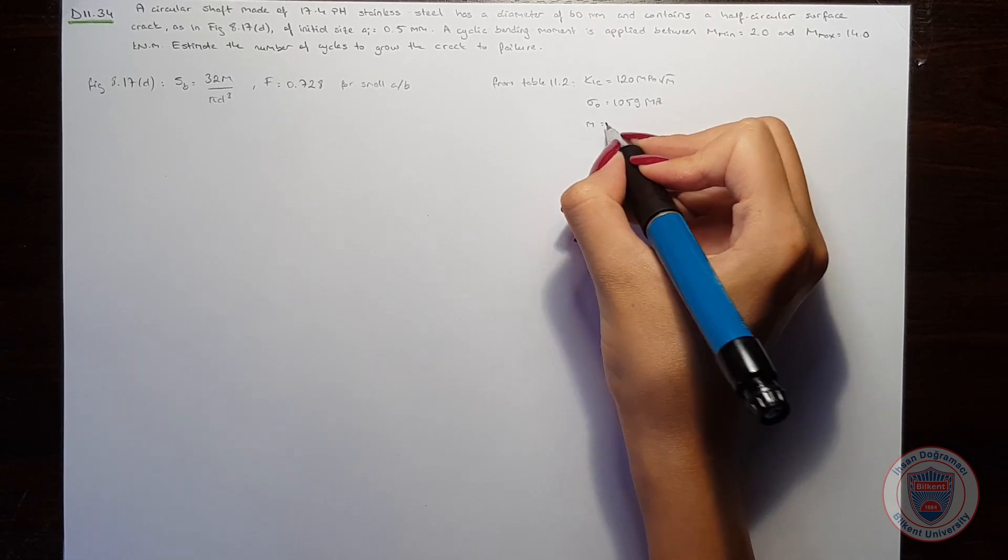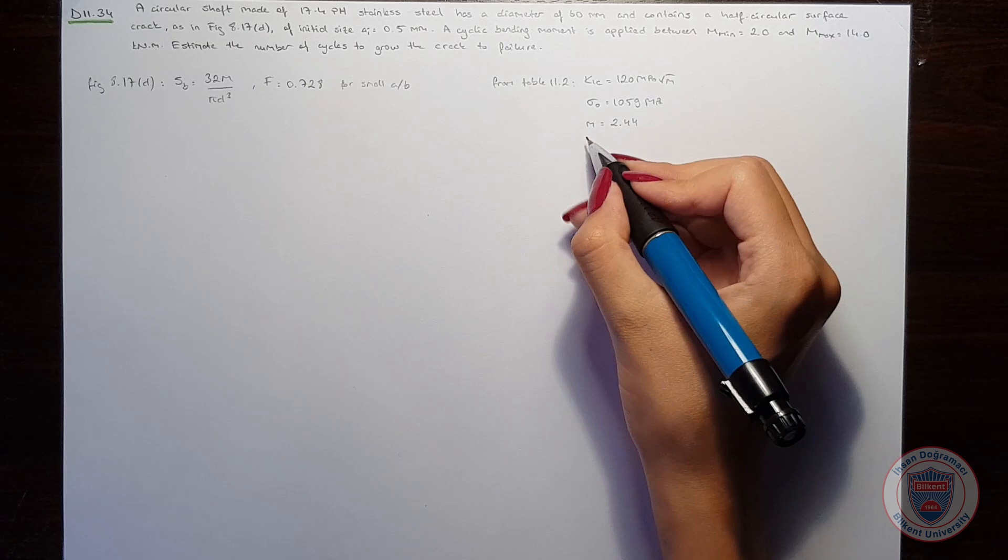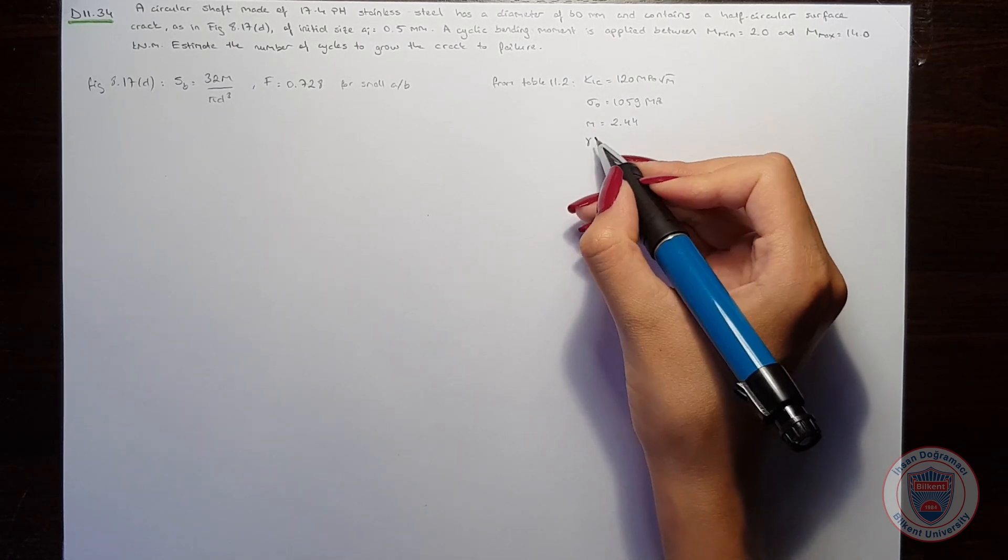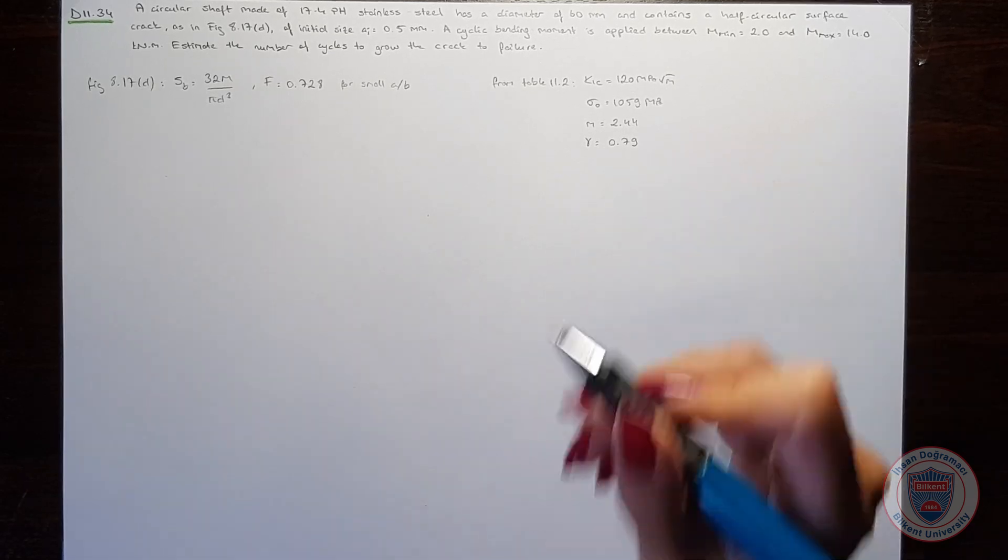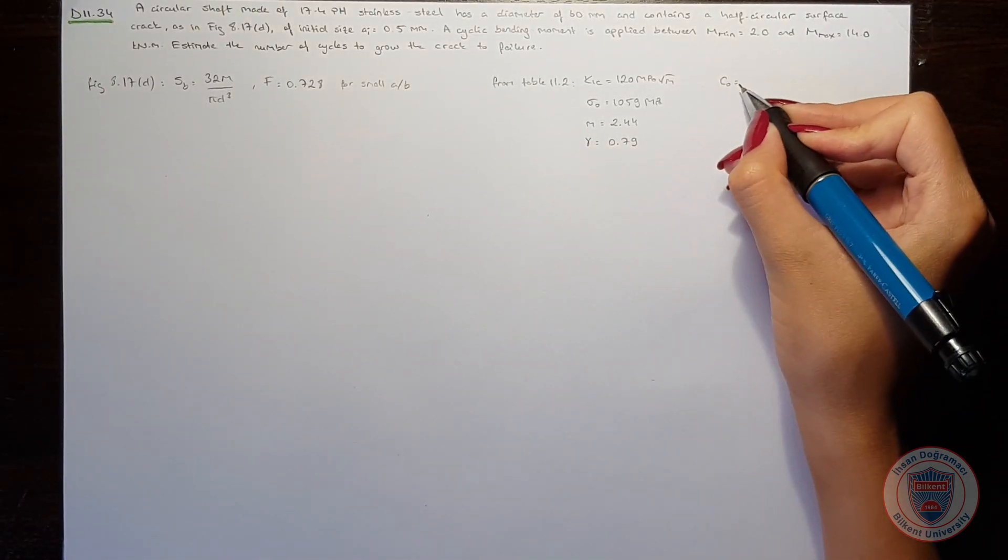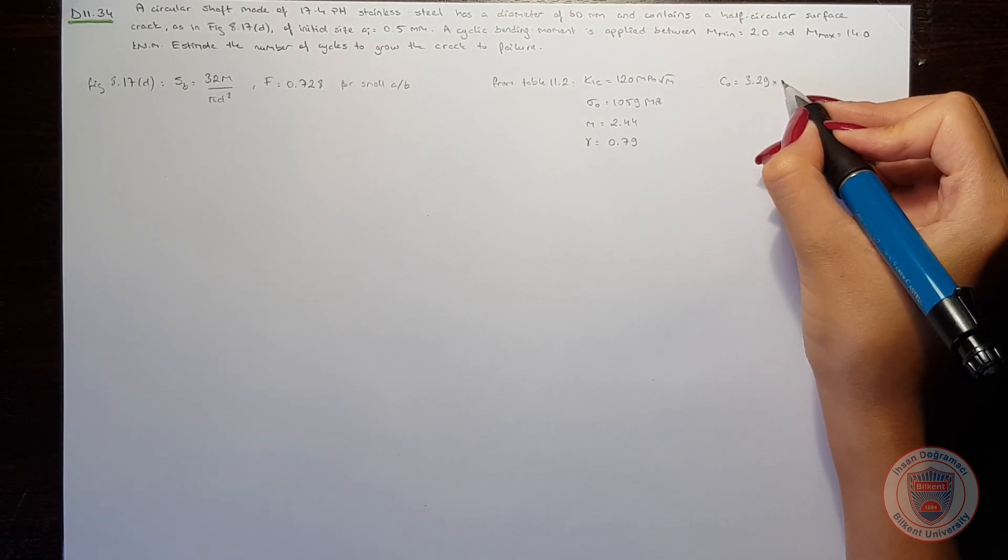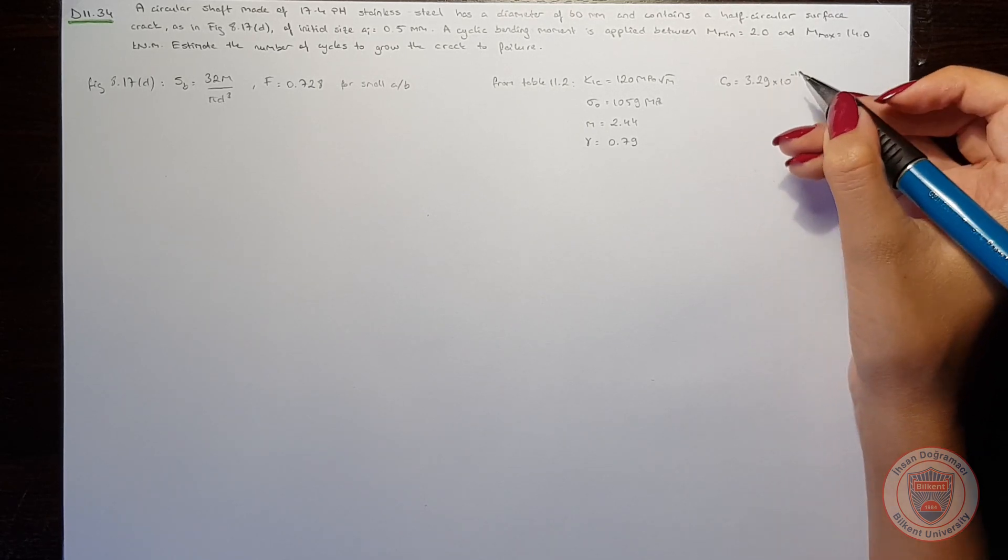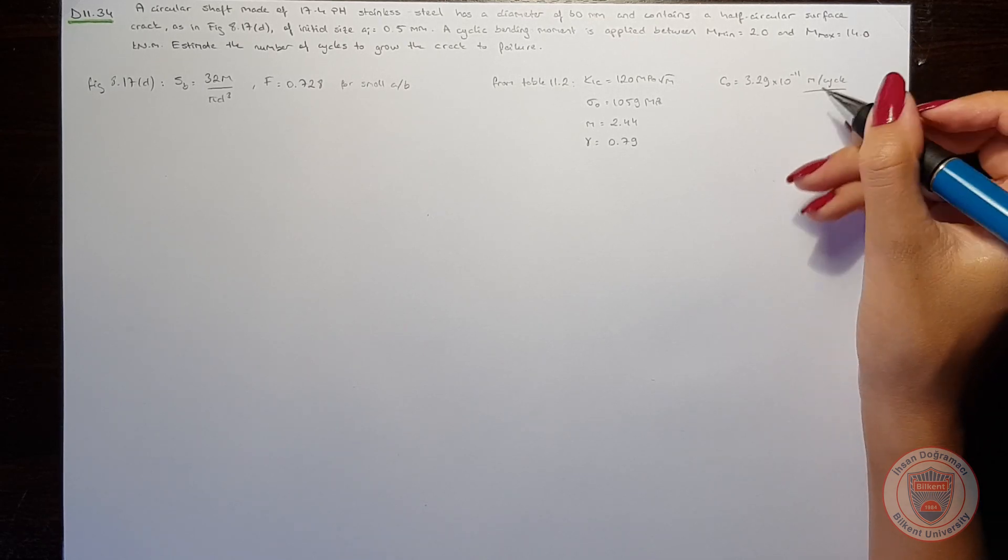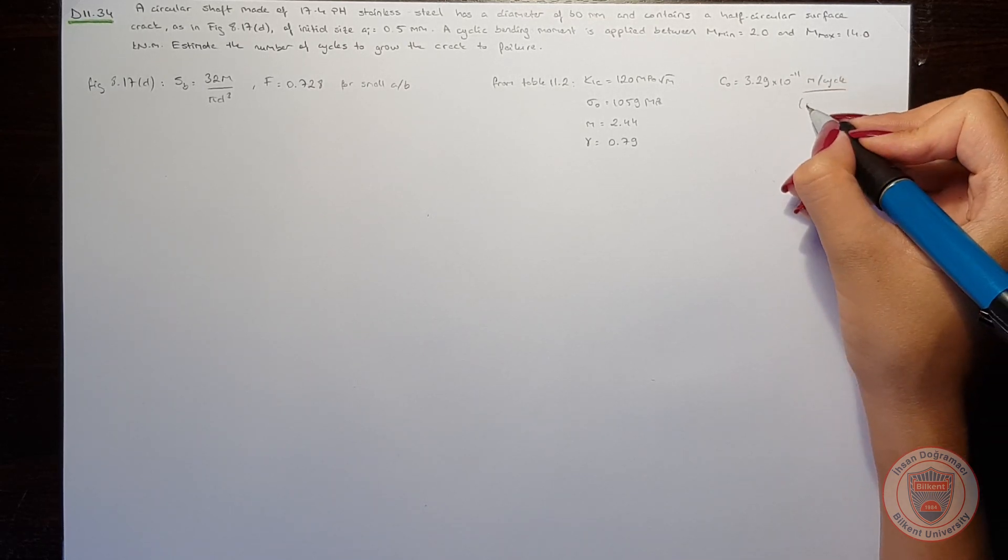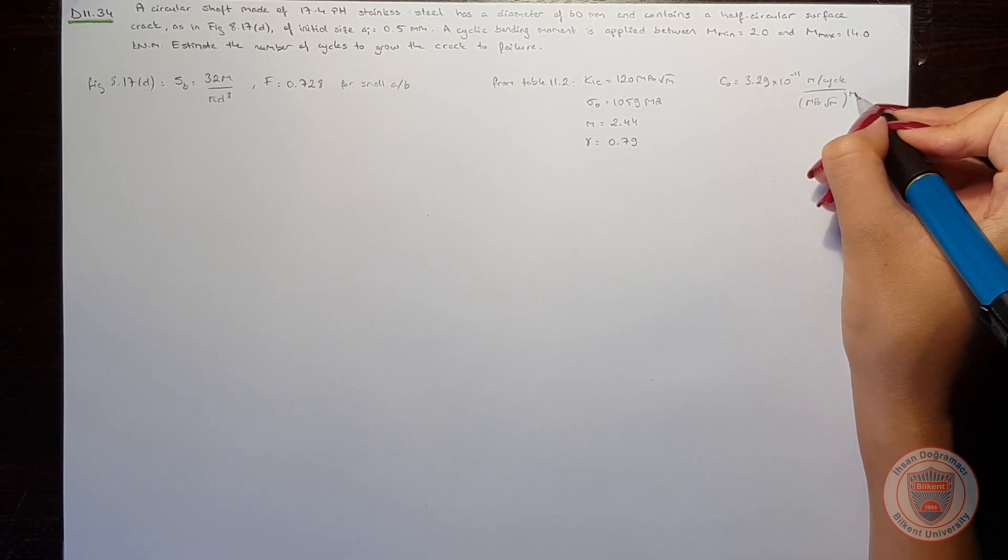m will be 2.44, γ will be 0.79, and finally, C₀ will be 3.29 times 10 to the power of minus 11 meters per cycle over MPa square root meters to the power of m.